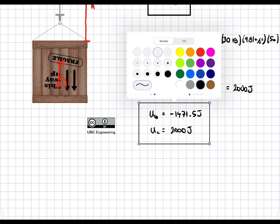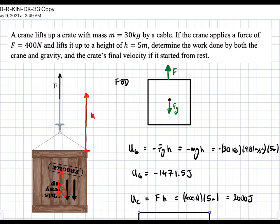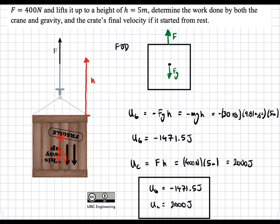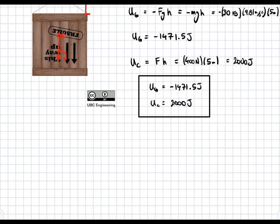Next up, we're asked to find the final velocity of this crate, assuming that it's starting from zero. These two forces — the force due to gravity and F — are not balanced, so we have a resulting acceleration. It's a dynamic system. The formula we're going to use from kinetics is: V final squared equals V initial squared plus 2 times acceleration times D, the distance traveled. We know D is 5 meters, the initial velocity is 0, and we're solving for VF. We need to find the acceleration.